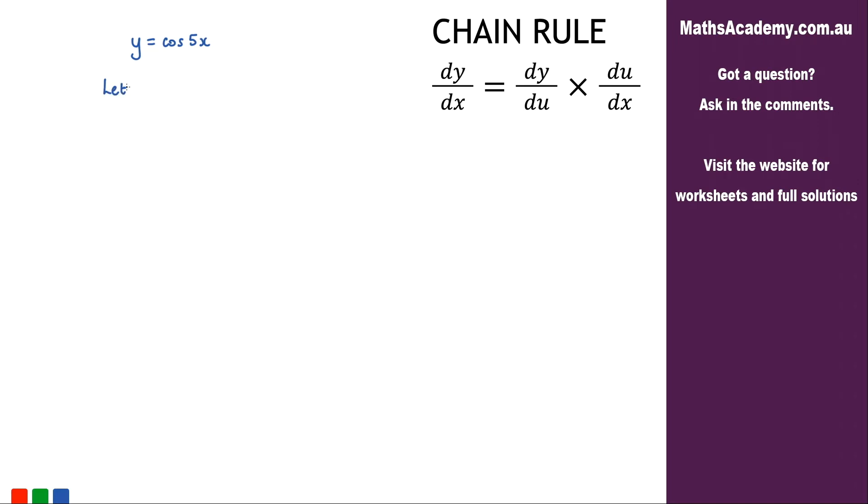The substitution we make is to let u equal 5x. We go ahead and differentiate that. So du by dx is equal to 5.